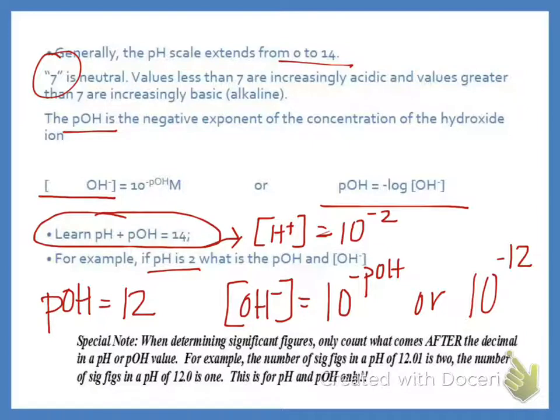A special note about significant figures. They're a little bit different whenever we're calculating them for pH. What comes after the decimal is what counts as a significant figure if I have a pH or a pOH. So if I had this value right here, the only two that I would count is 01. That's because pH is on a log scale of 10. If I had 12.0, it would have 1. This is only for pH and pOH only, so don't let it confuse you.